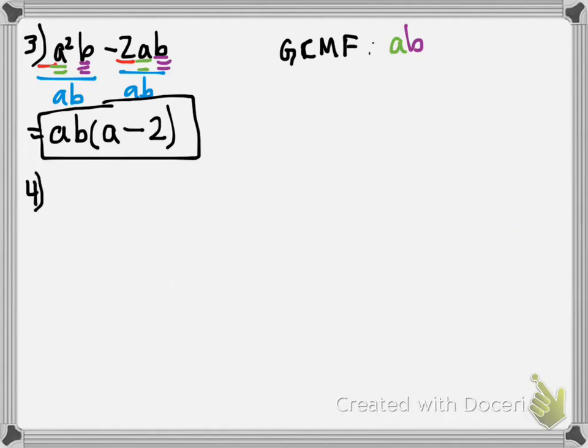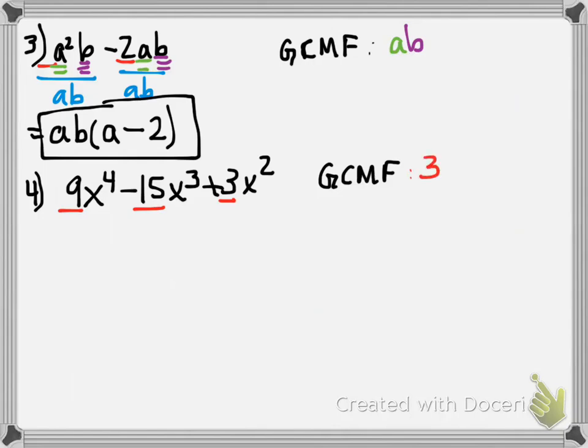So tonight's homework, again, should be pretty easy. All right, next one. 9x to the 4th minus 15x cubed plus 3x squared. So we're going to look for the GCMF first. Coefficient 9, 15, 3. What do they have in common? 3. There's a 3 that I'm going to pull out. And then, let's see. x to the 4th, x cubed, x squared. x squared.